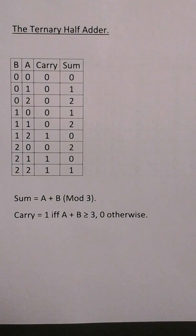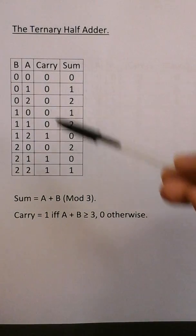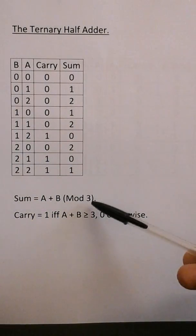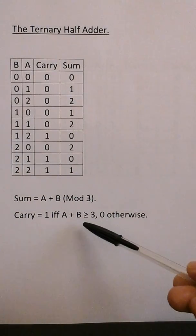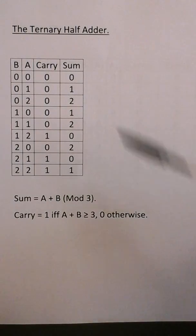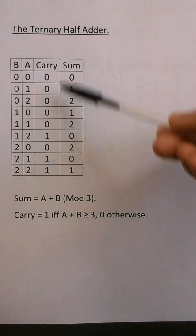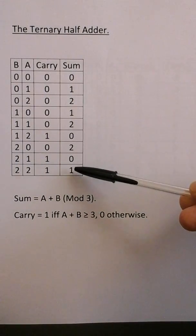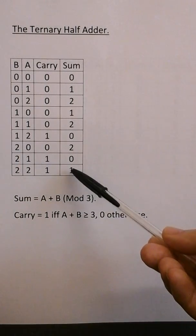I'll be going through the ternary half adder. Here we have the sum and the carry of the ternary half adder, with inputs a and b. The sum is a plus b modulo three, and the carry is one if and only if a plus b is greater or equal to three, and zero otherwise. So the carry is the multiples of three and the sum is the modular remainder. For example, two plus two is four: one times three plus one equals four.